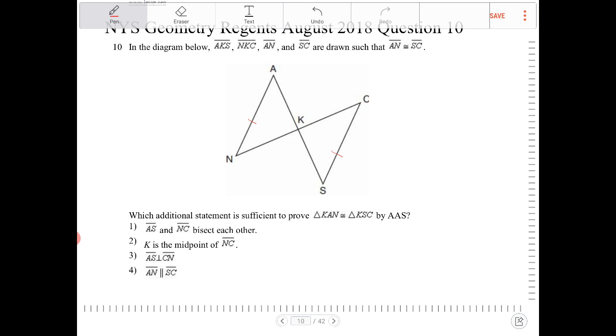AAS and NC bisect each other. If they bisect each other, that will certainly prove the two triangles congruent, but it will prove the triangles congruent by SSS because these two will be the same and then these two will be the same. So that's not the way in which the question wants us to prove the two triangles congruent. So that's not it.